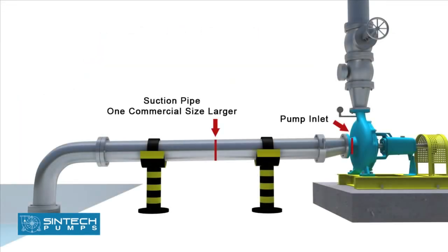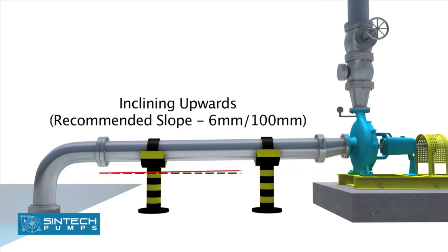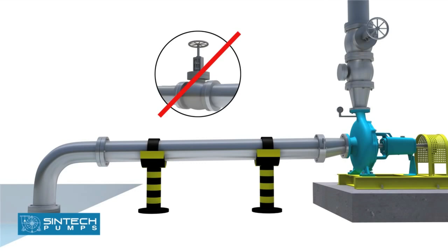The suction pipe size should be at least one commercial size larger than the opening of the pump inlet. All suction pipes should have a continuous rise to the pump suction inlet. 6mm per 100mm slope is recommended. No isolation valve is recommended.